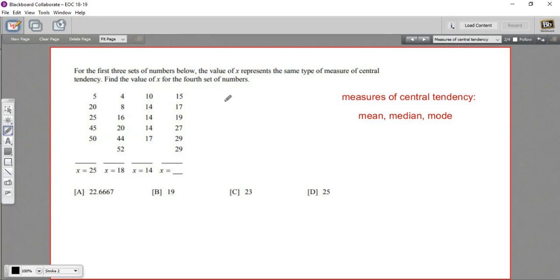The first one says, for the first three sets of numbers below, the value of X represents the same type of measure of central tendency. Okay, so for this set of data, this X is either the mean, the median, or the mode. Same with this, same with this. And for this one, it looks like find the value of X for the fourth set of numbers. So we have to figure out what's going on here to get this 25, 18, and 14, and do the same thing to find this value of X for the fourth set of data.